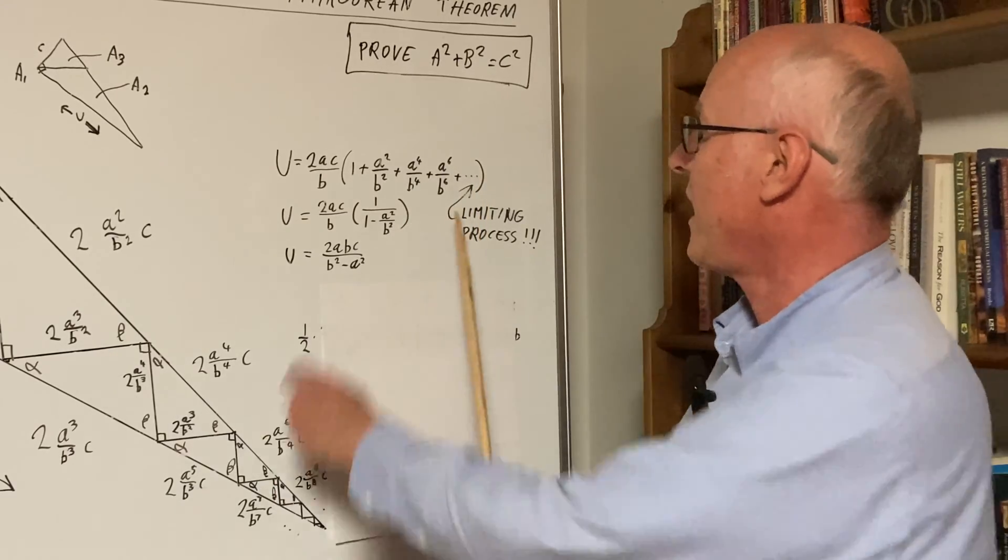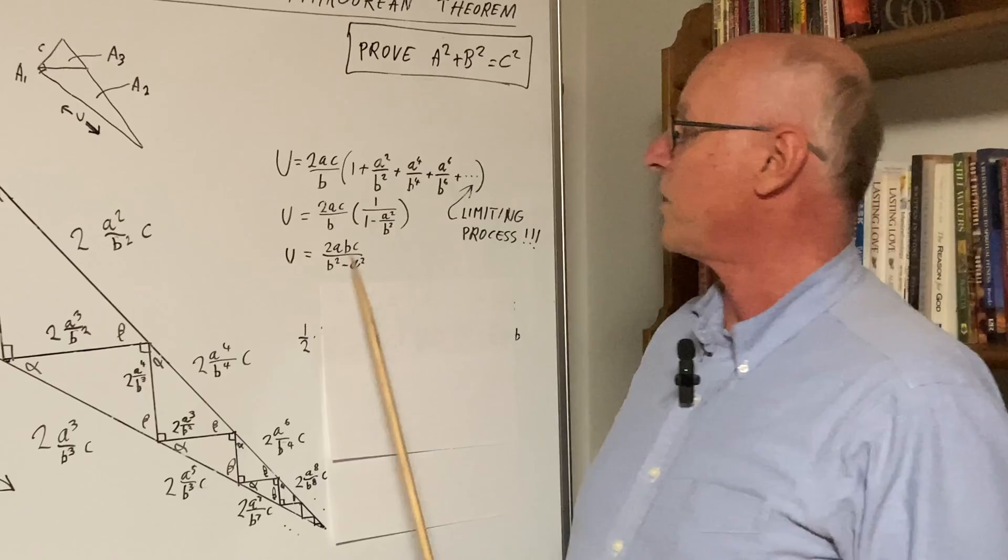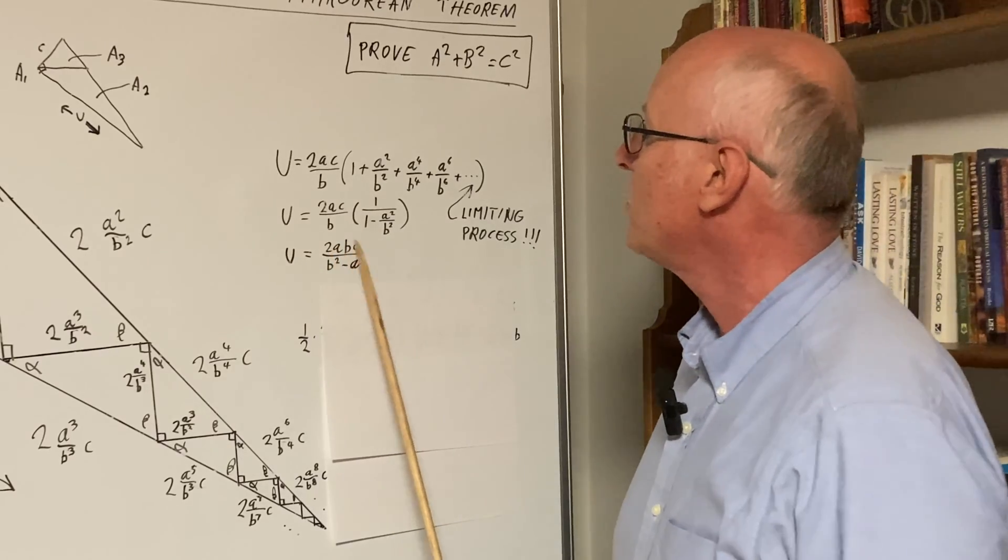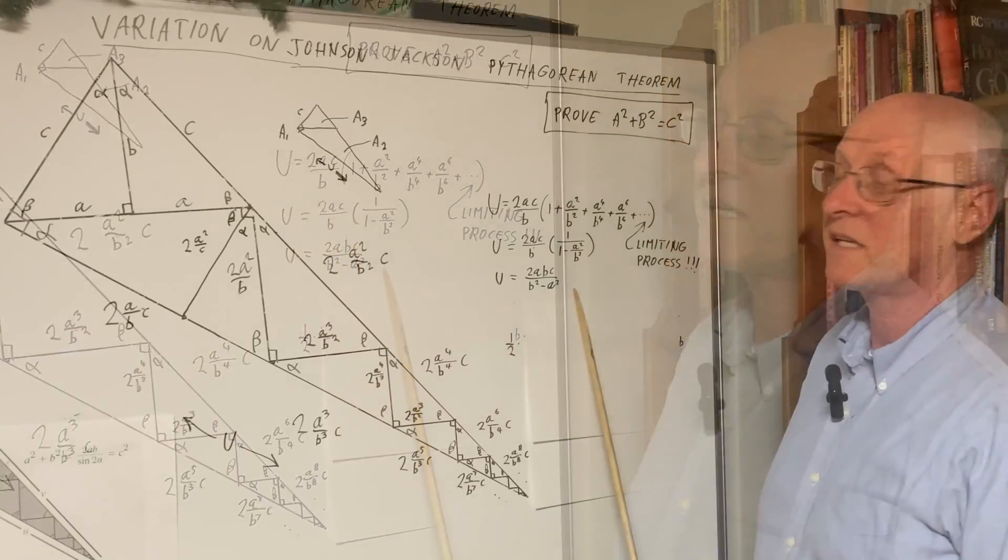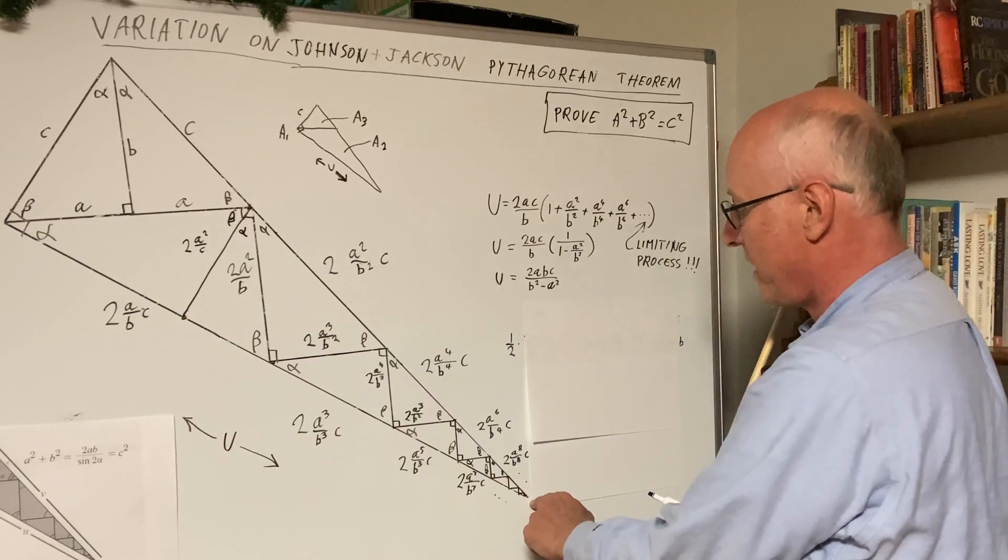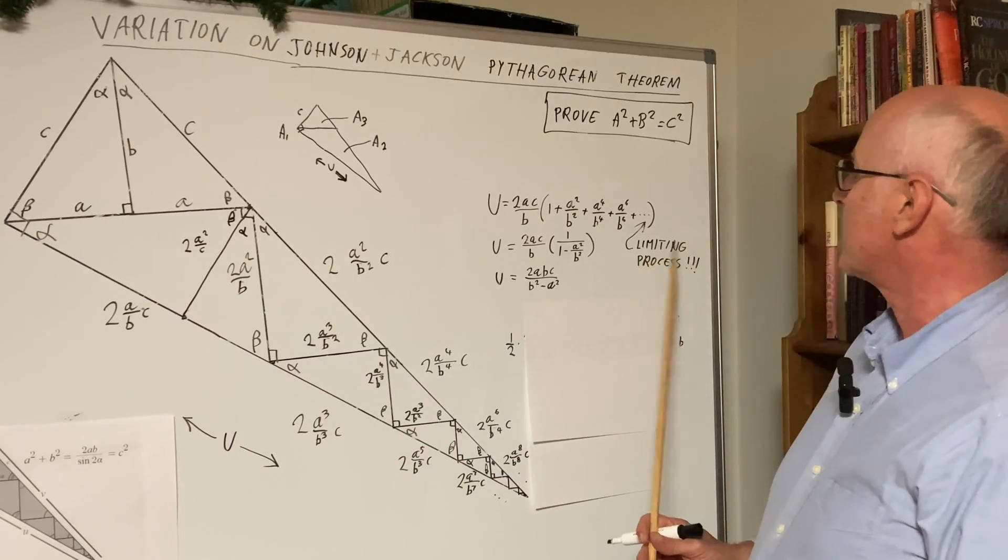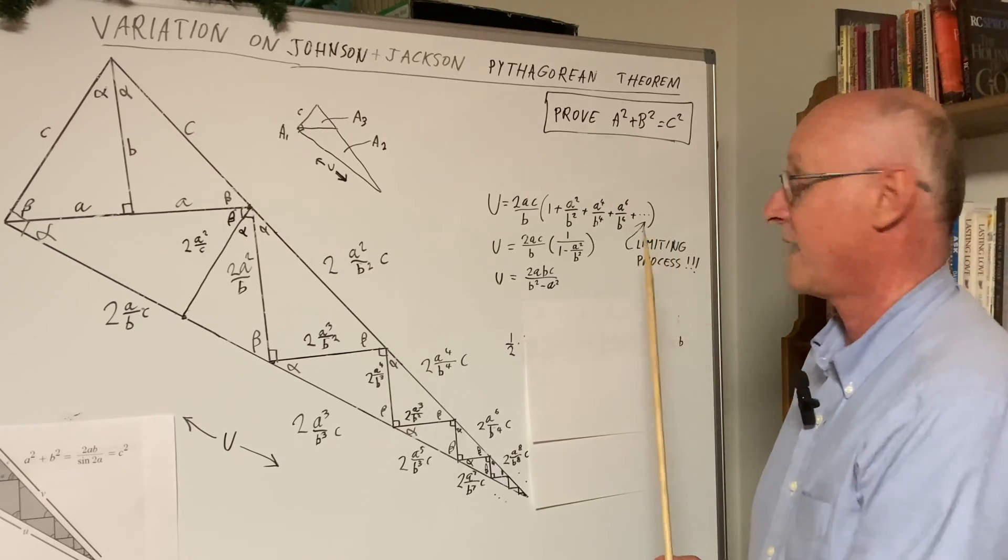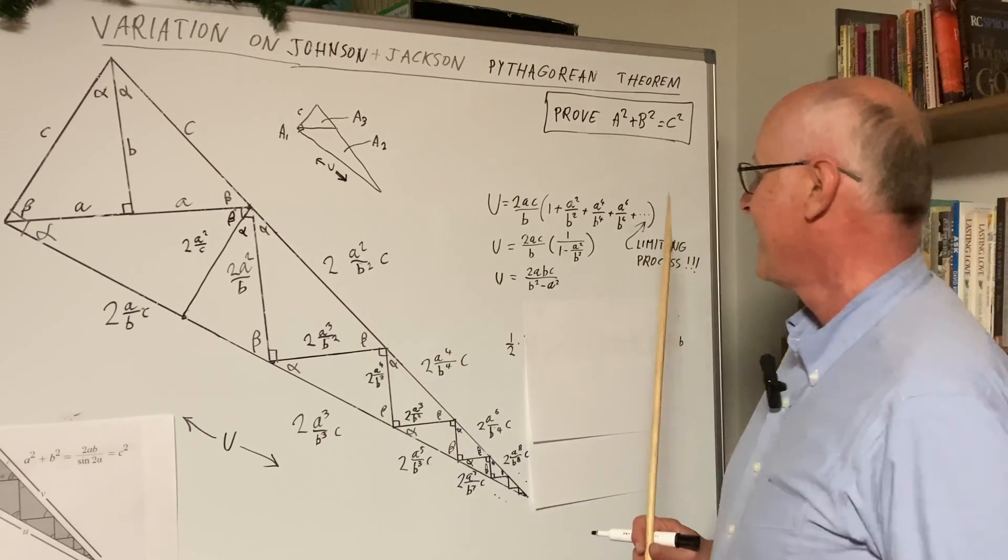So here we have it. We clean this up a little bit. We get u equals 2abc over b squared minus a squared. So that is the distance from here all the way here, using this limiting process. That's calculus.